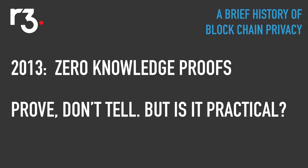This has obvious privacy applications to blockchain systems, but it has some practical issues. The performance is low. It's very new mathematics that very few people understand. It has a setup procedure in which developers can create a backdoor into the system — the people who set it up, if they don't follow the procedure as they're supposed to, they could forge these supposedly mathematical proofs. And in general it just wasn't ready for integration.